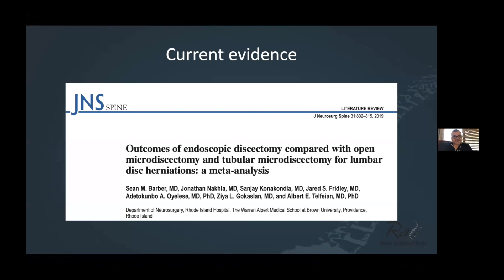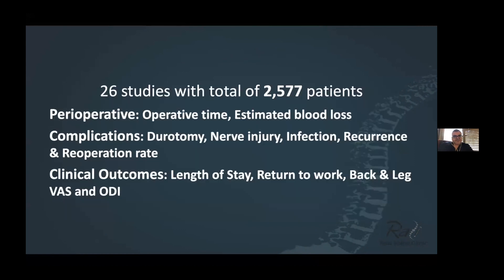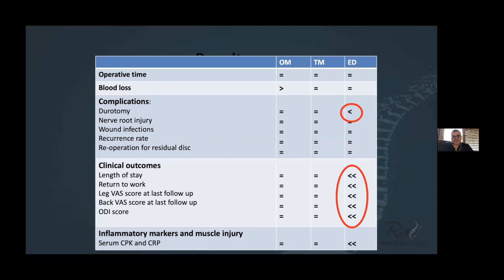From the previous couple of years, three or four meta-analyses came out and all showed that endoscopic discectomy does work. When compared — like this paper from the Albert Turfine Group — to tubular microdiscectomy and open microdiscectomy, complication rates were actually less, in particular durotomy rates were less in endoscopic surgery. And look at the VAS score in the leg and the back at two and three years follow-up, and in particular the ODI scores — they were significantly better in the endoscopic group.